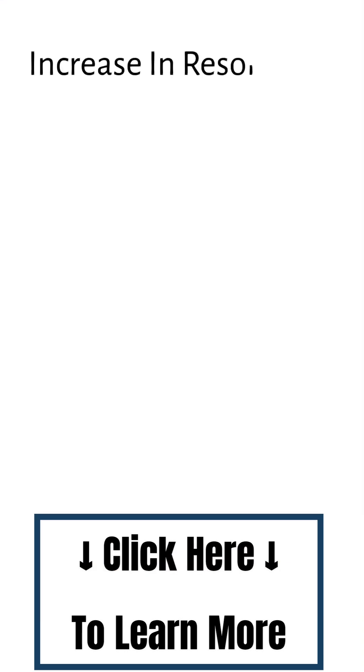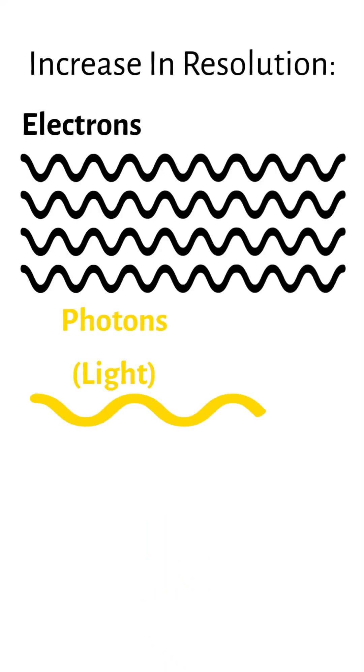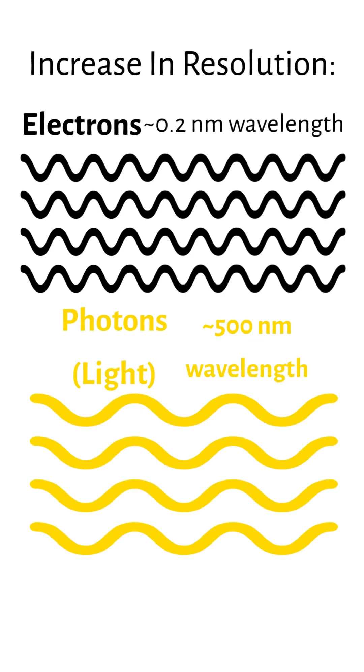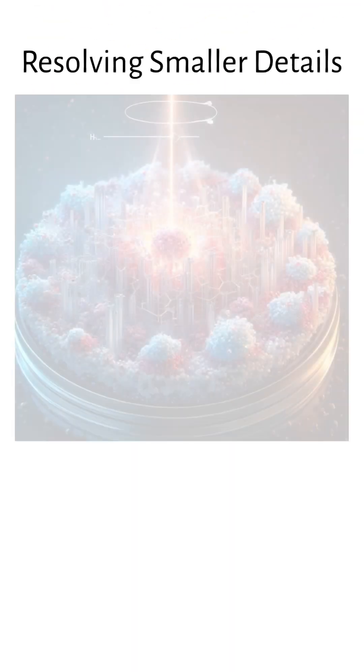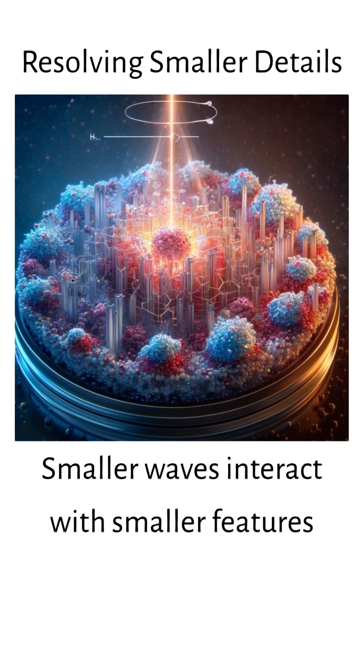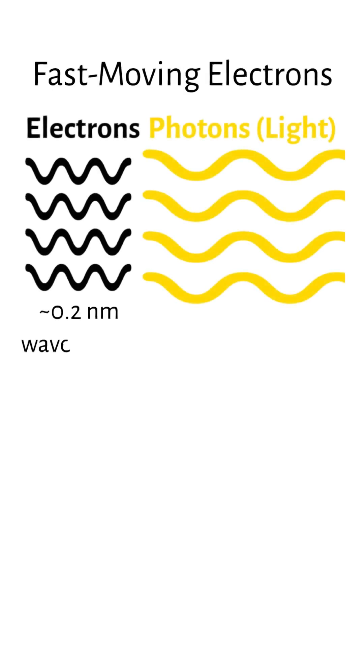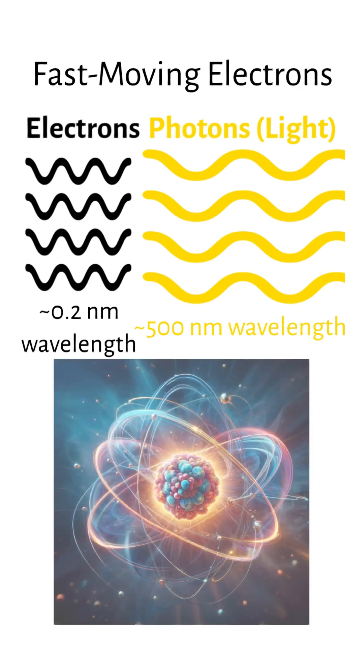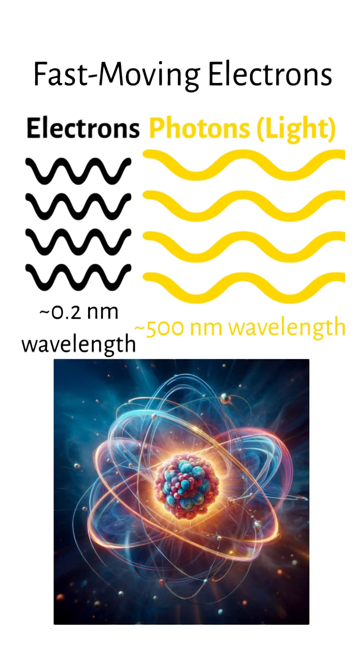The increase in resolution comes from the shorter wavelengths of electrons compared to the photons in light, resolving smaller details because they can interact with and be diffracted by smaller features within the sample. Since fast-moving electrons have much shorter wavelengths than visible light, they can be used to examine structures such as individual atoms.